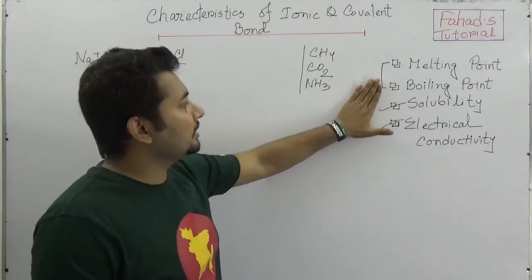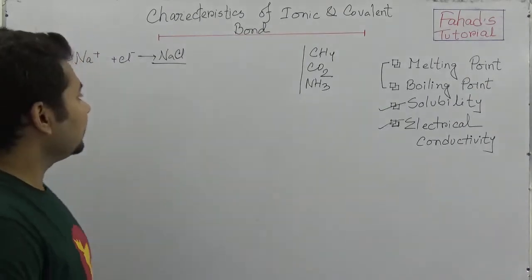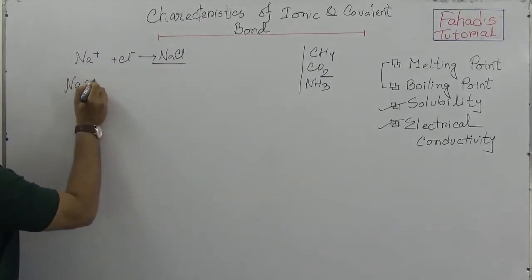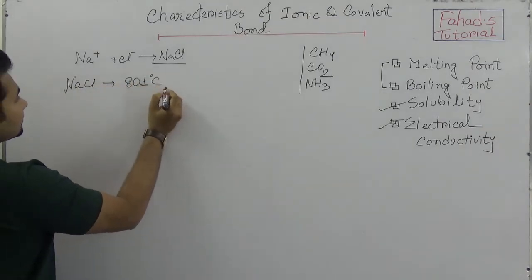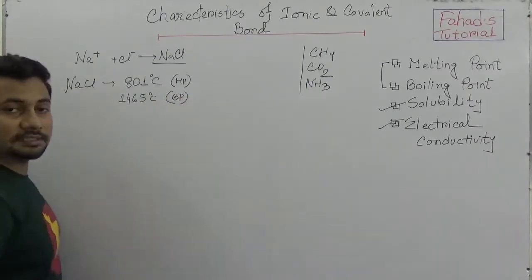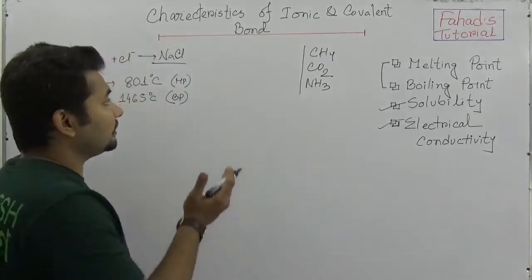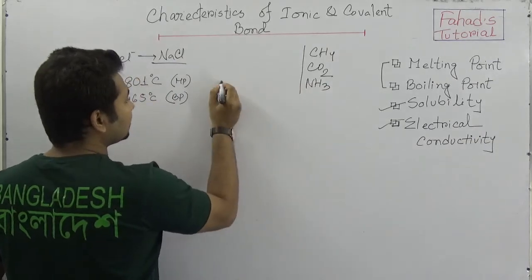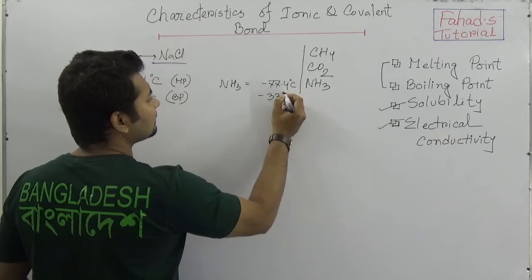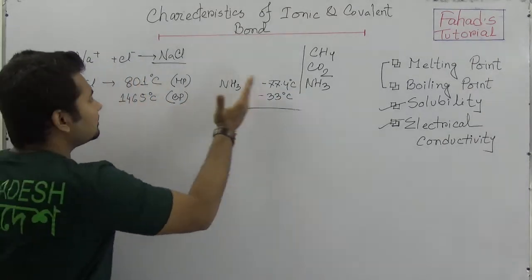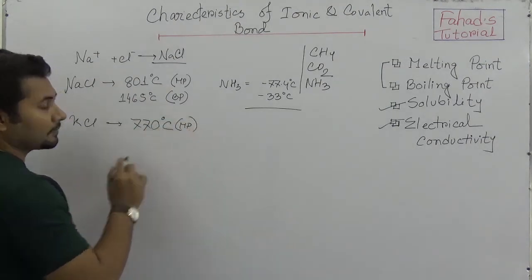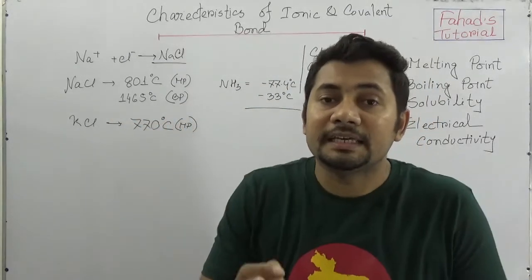Why do the melting point and boiling point differ in case of ionic and covalent compounds? The melting point of sodium chloride — our table salt — is 801 degrees Celsius, and the boiling point is 1465 degrees Celsius. Comparatively, in case of ammonia, the melting point is minus 77.4 degrees Celsius and the boiling point is nearly minus 33 degrees Celsius. You can see the difference is large.